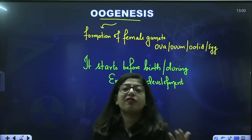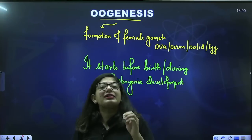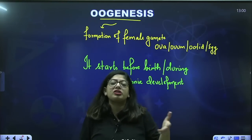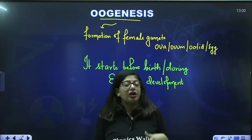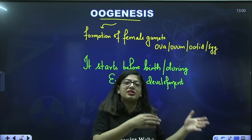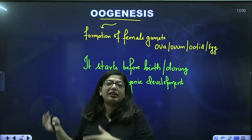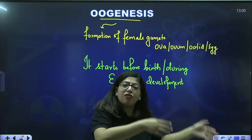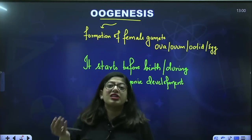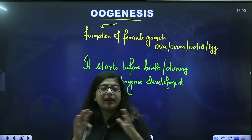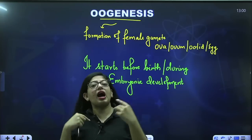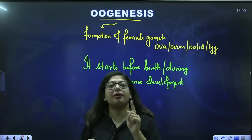Spermatogenesis, or formation of the male gamete, starts during puberty. But female gamete formation starts right before birth. For example, I am a female — so my oogenesis started when I was in my mother's womb, when I was a fetus. Unlike spermatogenesis which starts at puberty, oogenesis starts before birth during embryonic stages.